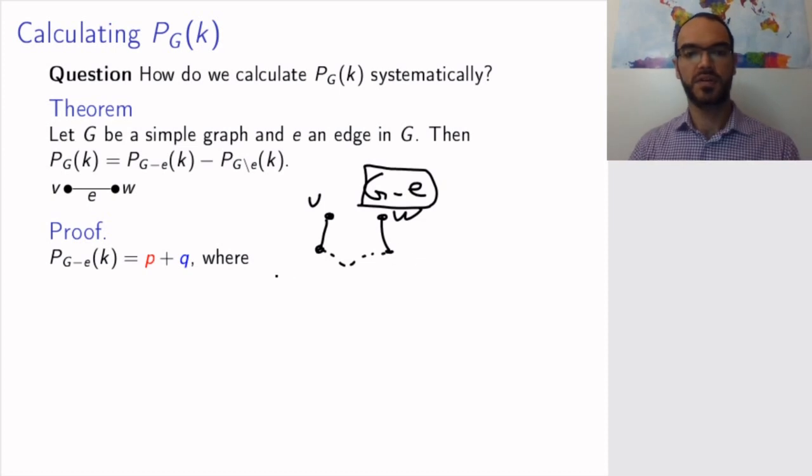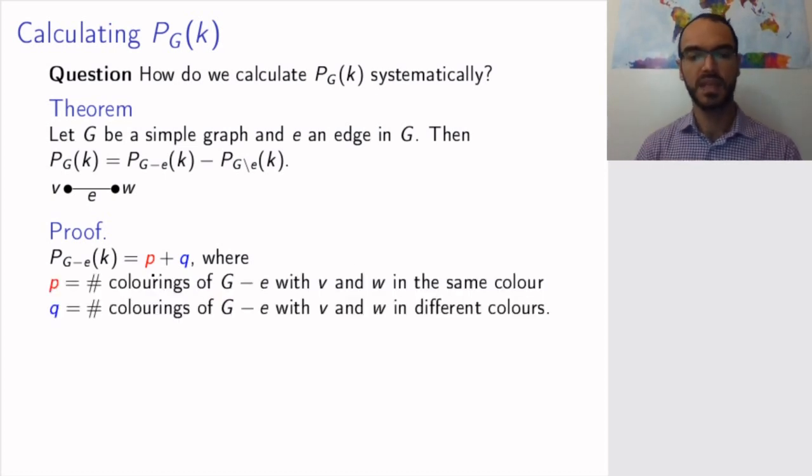So I'm going to write the number of colorings of G minus E as p plus q. So what are p and q? p is the number of colorings where v and w have the same color, and q is the number of colorings where v and w have different colors. Obviously, these are all the possibilities, and both of them are allowed because v and w are not adjacent.